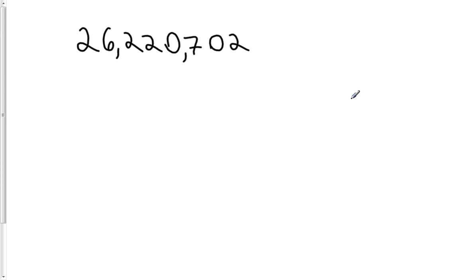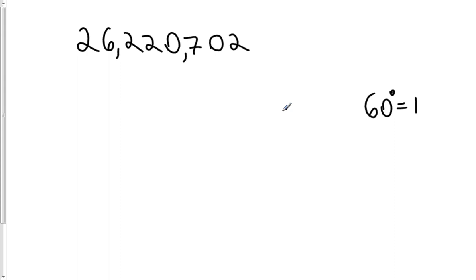The place values are really just consecutive powers of the base. So the first place value, the one's place, is actually the base 60 to the zero power. 60 to the zero power is equal to one. The next place value — in our place value system the next place would be the tens place, but the base is not 10 here, it's 60. So the next place value is actually the sixties place, 60 to the first power, which is 60. That's the second place value in the Babylonian system, the sixties place.